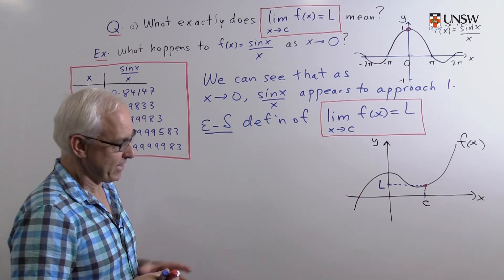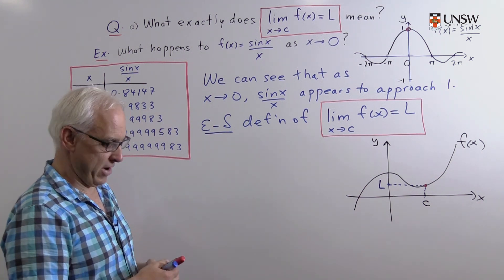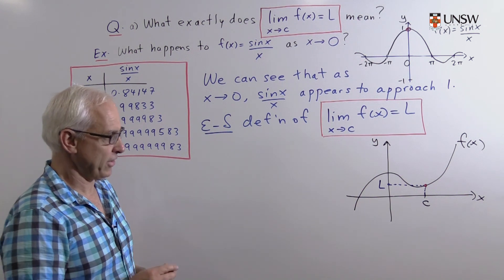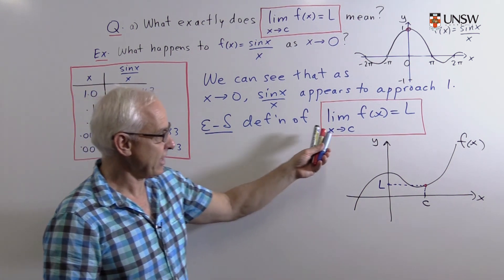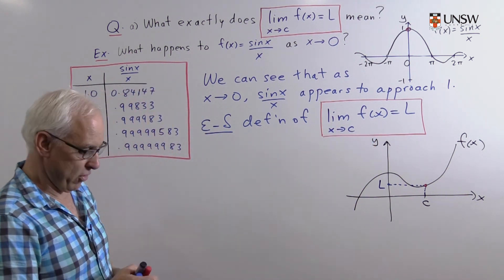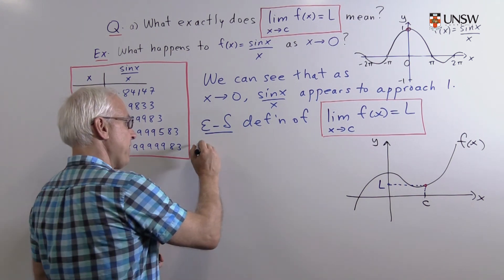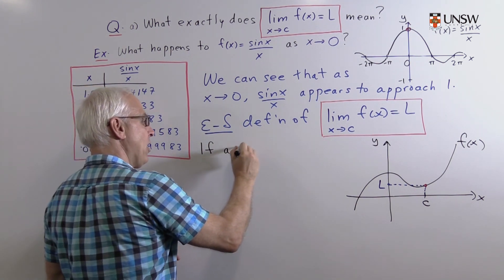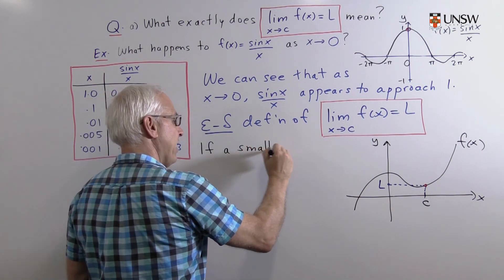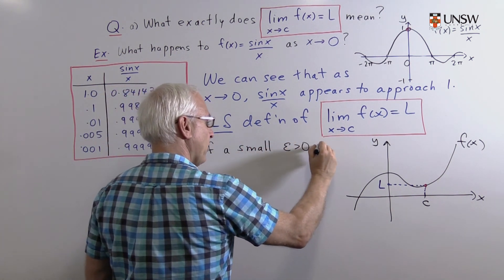Let's have a look at this diagram. Cauchy said the way we're going to interpret this is the following.